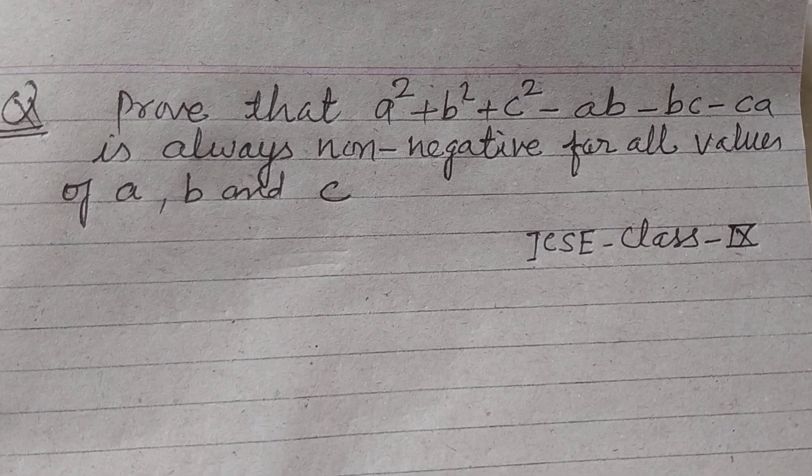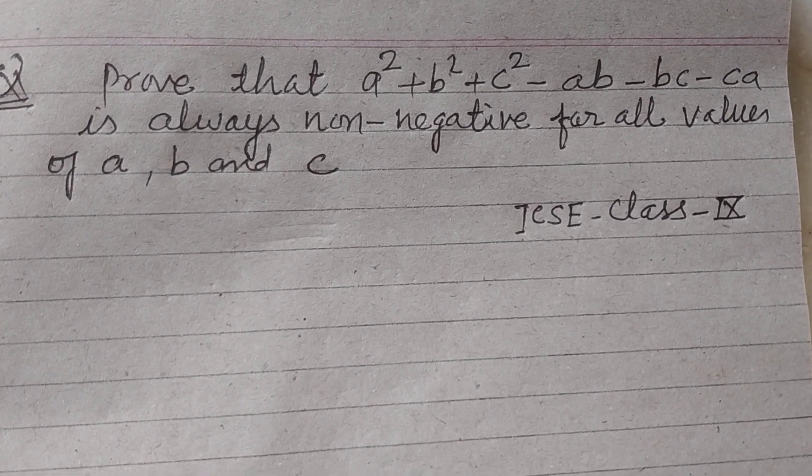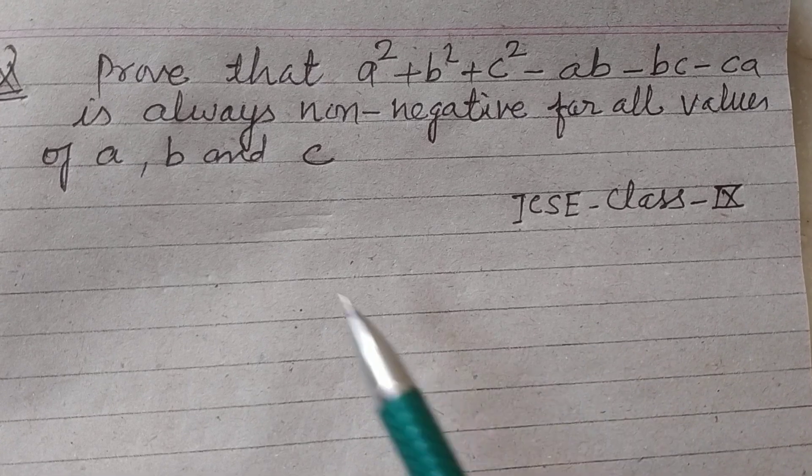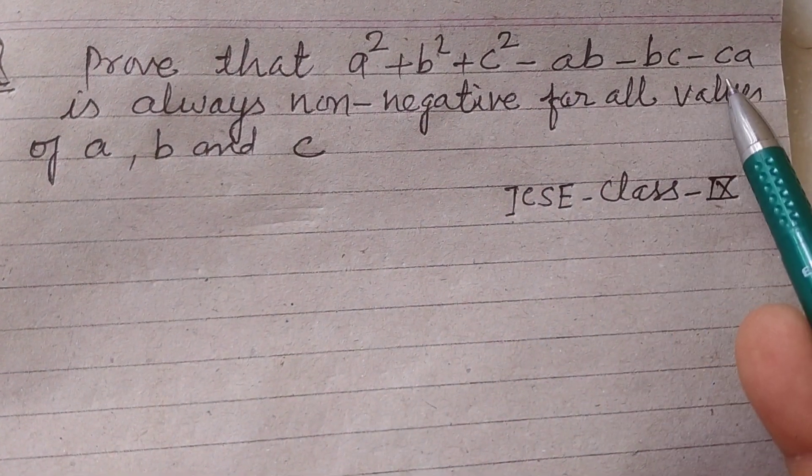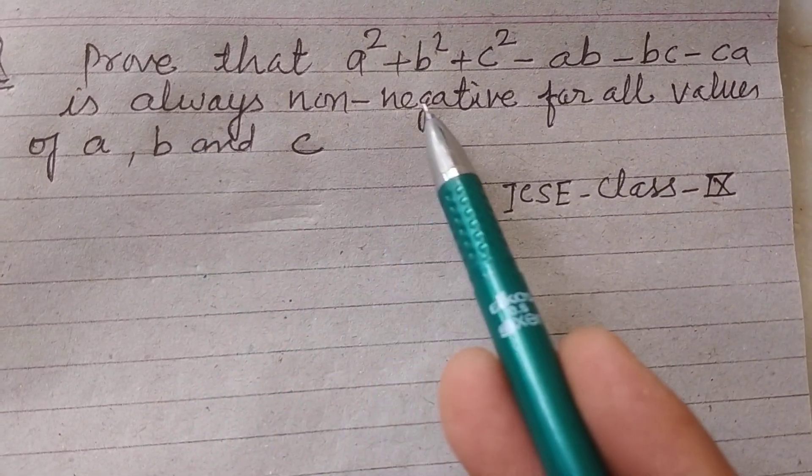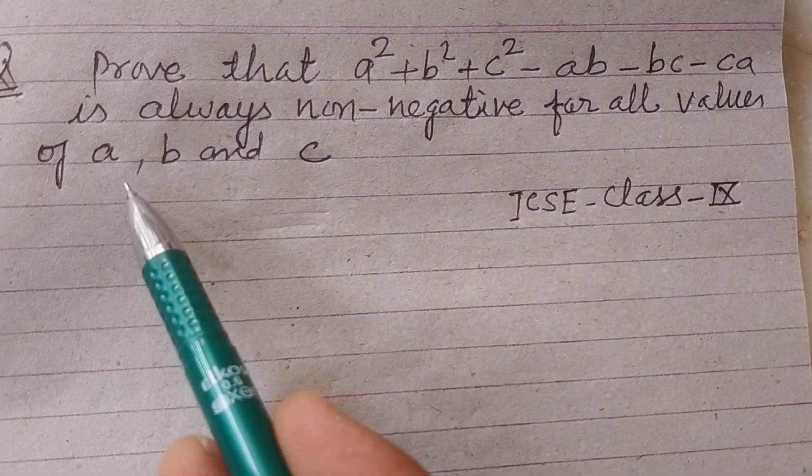Hello students, welcome to this YouTube channel. Question from ICSE class 9: prove that a² + b² + c² - ab - bc - ca is always non-negative for all values of a, b, and c.